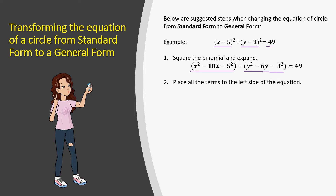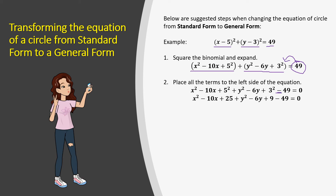Now let's place all terms to the left side of the equation. On the right side we have only 49, so when we transpose it to the left side it will become negative 49. Then let's expand all the squared constants: 5 squared is 25 and 3 squared is 9.